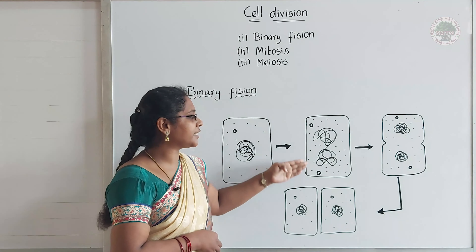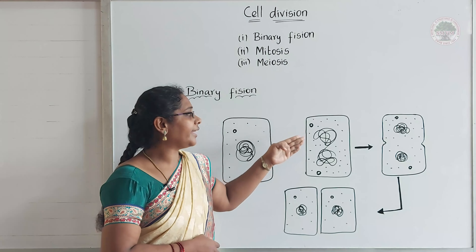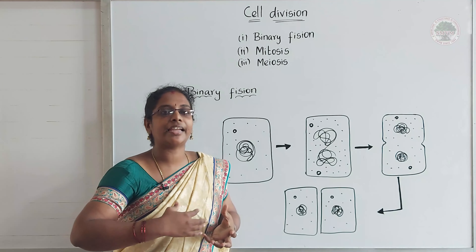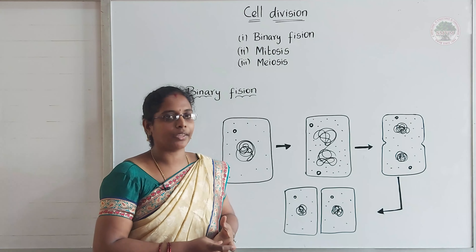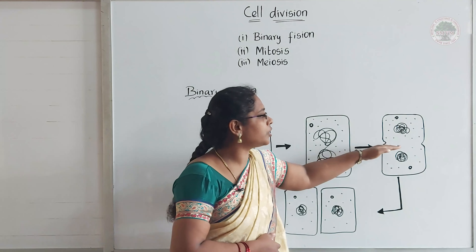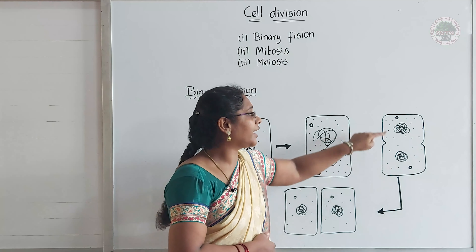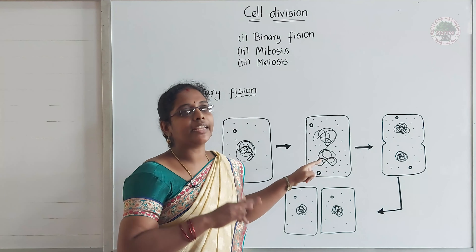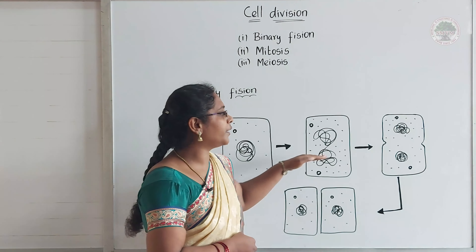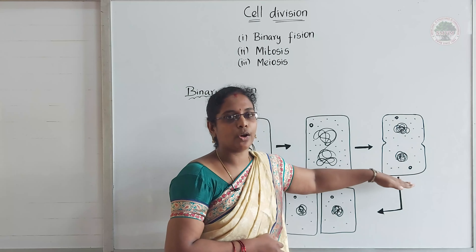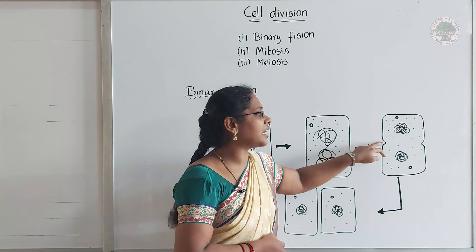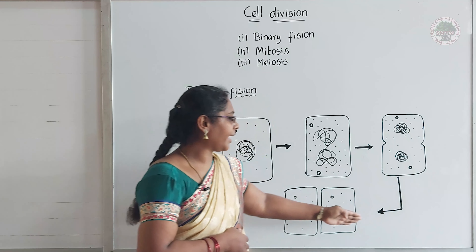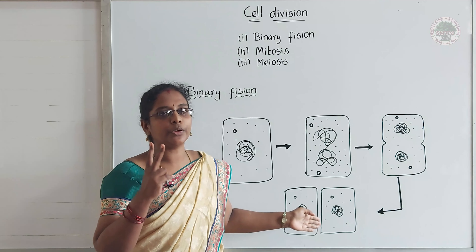The centrioles become duplicated. The nuclear matter also elongates in size and makes one more copy of itself. Then both the nuclear matters are drawn to each side of the cell by the centrioles. The ribosomes present in the cell increase in number and equally go to each side of the cell. Then the cell wall starts to undergo cleavage, which means it starts to divide, and at the end, we get two different cells.